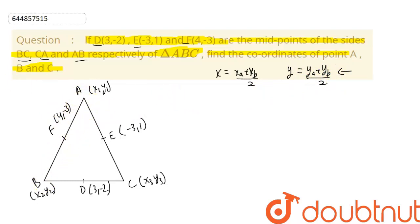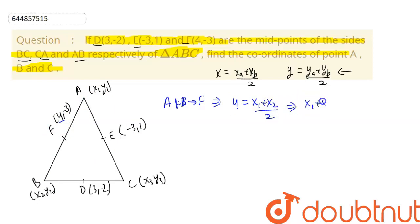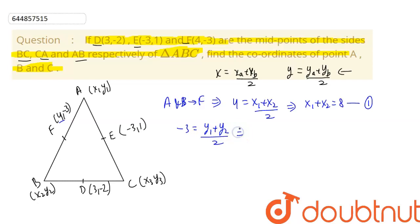Considering points A and B, the midpoint is point F. So the x-coordinate of F gives us: 4 = (x1 + x2) / 2, which means x1 + x2 = 8. This is equation 1. Similarly, the y-coordinate of F gives us: -3 = (y1 + y2) / 2, so y1 + y2 = -6. This is equation 2.